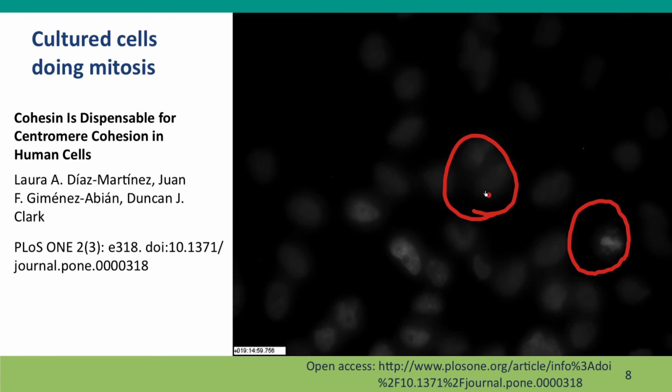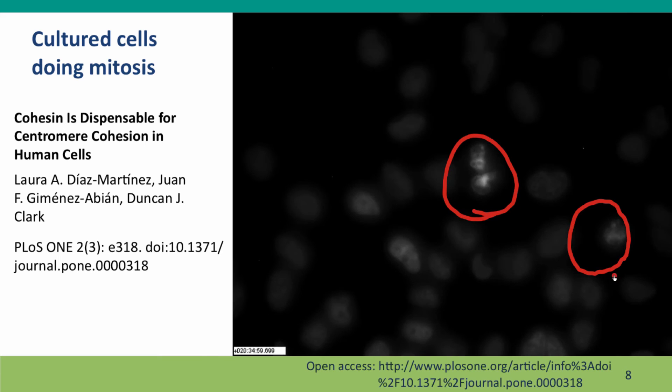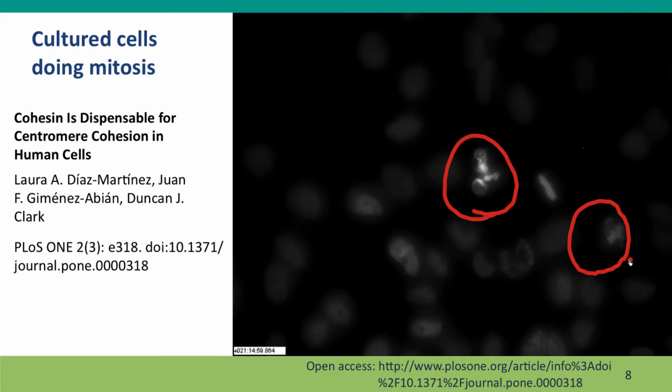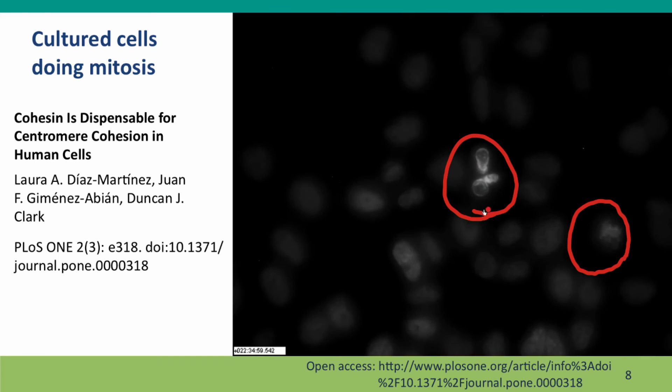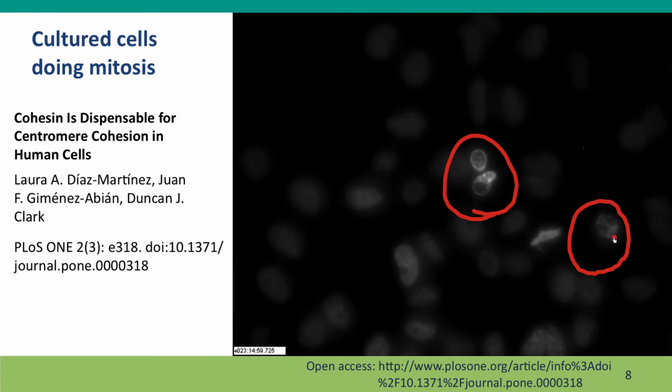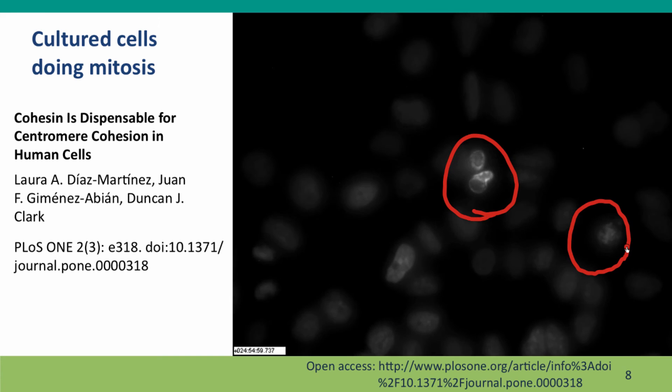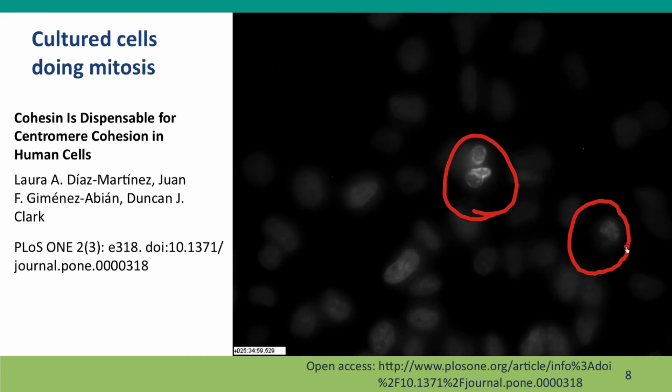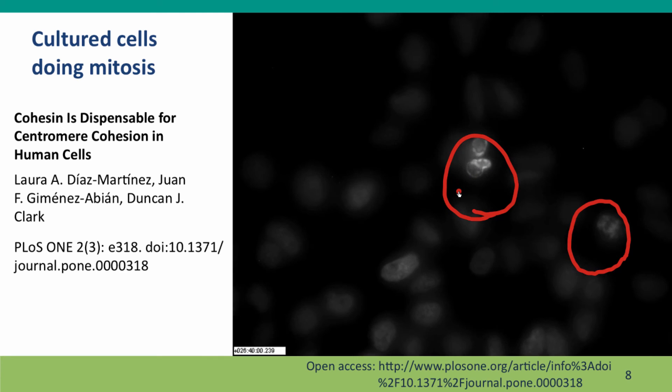These cells haven't started trying to divide yet. This cell is getting increasingly frantic in its attempt to sort out its chromosomes. Oops! Those cells just tried to divide and look at the mess they made. This cell is still struggling. There's another one going to complete it successfully. So these two cells provide examples of the kinds of things that can go wrong.